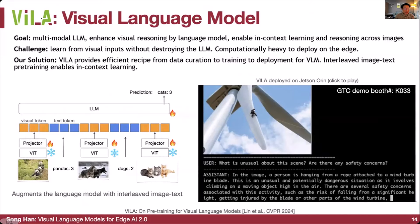The goal of VILA is to support a multi-modal large language model, covering both vision and language, to enhance visual reasoning by the language model and enable in-context learning and reasoning across many images — not just one image, but multiple images. In-context learning means we can just give the context and some examples without explicitly stating what the task is.